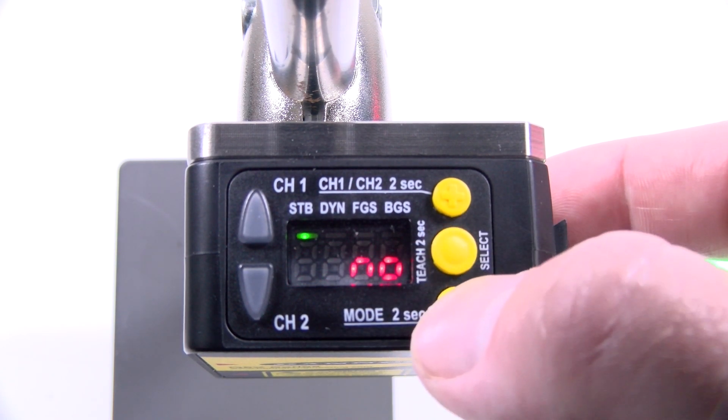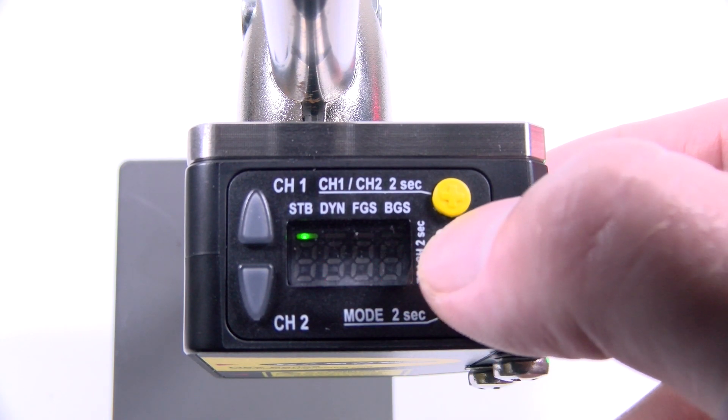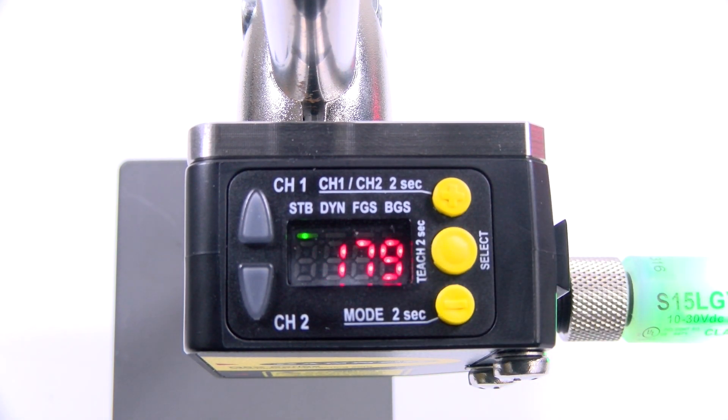Hit the middle button once and then hit either the plus or minus button to toggle to yes. Hit the middle button again to confirm. The sensor will reset and return to run mode.